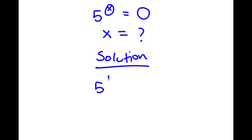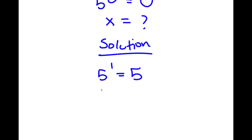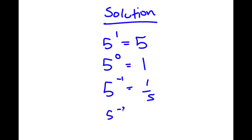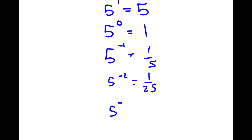If I have 5 to the power of 1, this is equal to 5. If I have 5 to the power of 0, any number to the power of zero is 1. If I have 5 to the power of negative 1, this is going to be 1/5. If I have 5 to the power of negative 2, this is going to be 1/25. And say I have 5 to the power of negative 10 — it's going to be 1 over 5 to the power of 10.